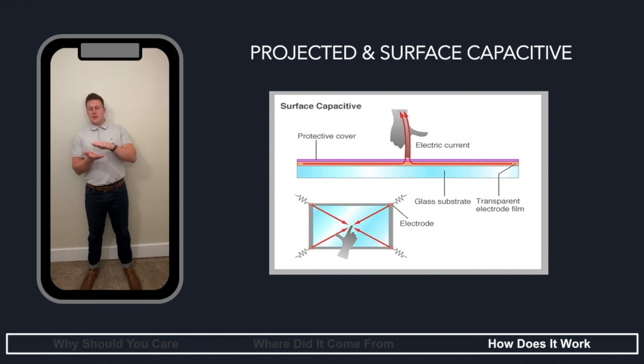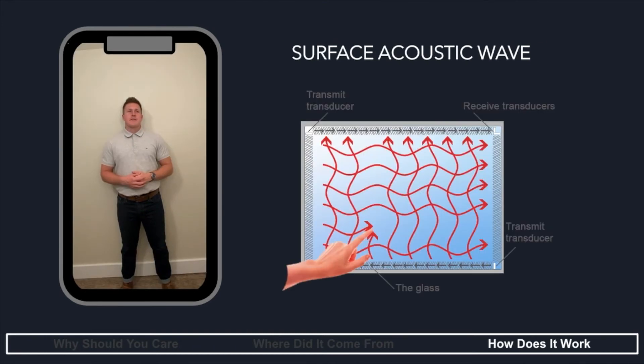This is the one with multiple layers of electrodes. Next, we have surface acoustic wave, or SAW. SAW technology uses ultrasonic waves that pass over the touchscreen panel. When the panel is touched, a portion of the wave is absorbed. The change in the ultrasonic waves is processed by the controller to determine the position of where the touch occurred.